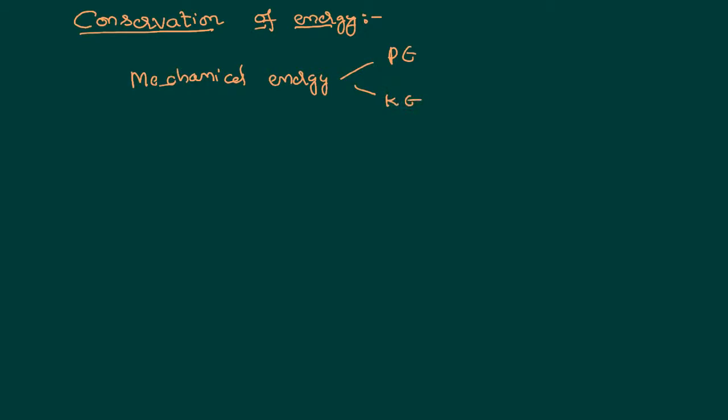For any system, when there is no loss of energy in any other formats, the total mechanical energy of the system — that is, the sum of potential energy and kinetic energy — always remains constant. If potential energy increases, kinetic energy decreases, but the sum of the total energies always remains constant.